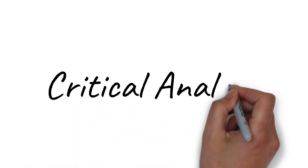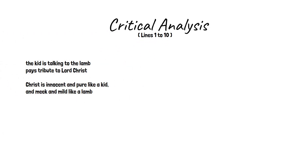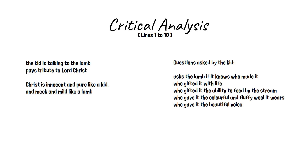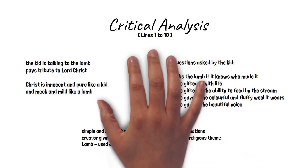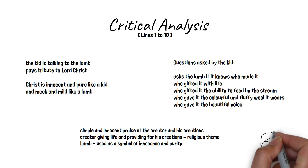Let us analyze the first ten lines of the poem for a better understanding. In the first ten lines, the kid is talking to the lamb. The poet pays tribute to Lord Christ in this poem, who was innocent and pure like a kid, and meek and mild like a lamb. The young child asks the lamb if it knows who made it, who gifted it with life and the ability to feed by the stream and across the meadow, who gave it the colorful and fluffy wool it wears, and who gave it the beautiful voice that fills the valley with delight. The poem is a simple and innocent praise of the creator and his creations, highlighting the idea that the creator gives life and provides for his creations, a common religious theme. The lamb is used as a symbol of innocence and purity, representing the idea that innocence can be found in the simple things in life.